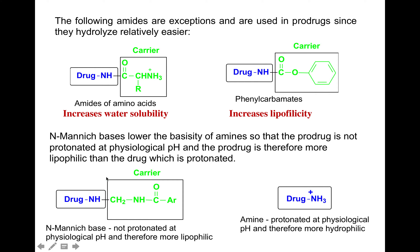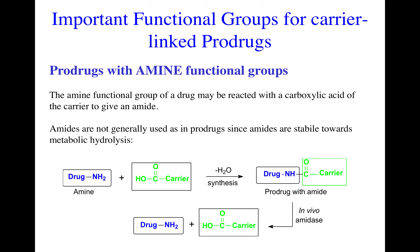The Mannich base lowers the basicity of amines, so that the prodrug is not protonated at physiological pH. The prodrug is therefore more lipophilic than the drug in its protonated form. This N-Mannich base lowers the basicity and is not protonated at physiological pH. You can use this approach to increase the lipid solubility of amide prodrugs. Remember, an amine which is protonated at physiological pH is therefore more hydrophilic — more water soluble. Please go back to the drug design and discovery lectures and review ionization, protonation, and their effects on water solubility.